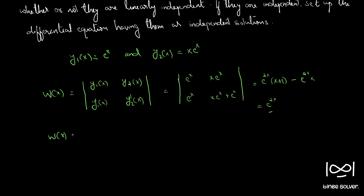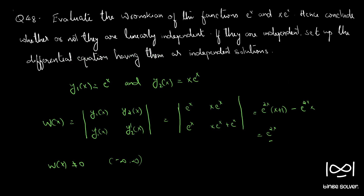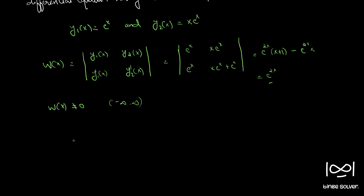We can see that W(x) = e^(2x) ≠ 0 for all x in the interval (−∞, ∞). Therefore, y1(x) and y2(x) are linearly independent.